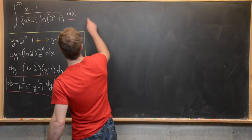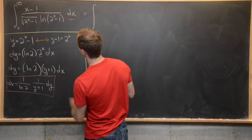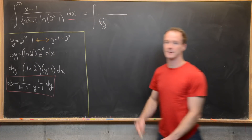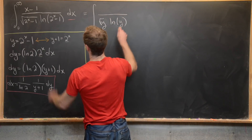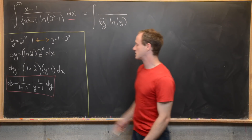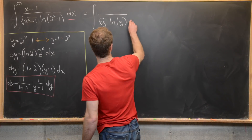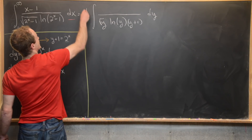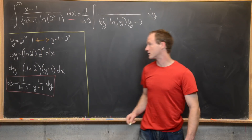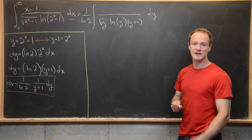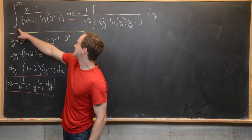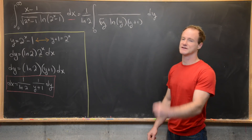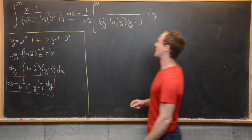Now substituting into the integral: the square root of (two to the x minus one) becomes the square root of y, and the natural log of (two to the x minus one) becomes the natural log of y. The dx component gives a (y+1) in the denominator, a dy, and a factor of one over ln(2) which we bring out front as a constant. For the bounds of integration: when x equals zero, y equals two to the zero minus one, which is zero; and as x approaches infinity, y also approaches infinity. So the bounds stay the same.